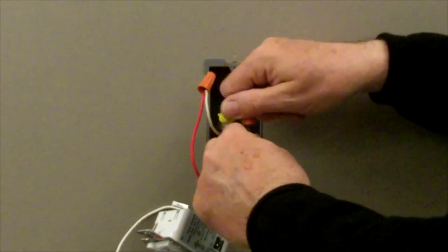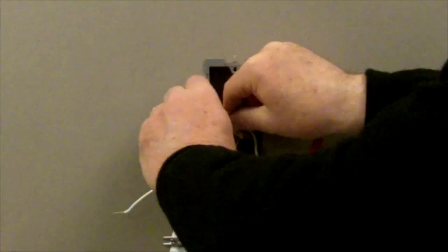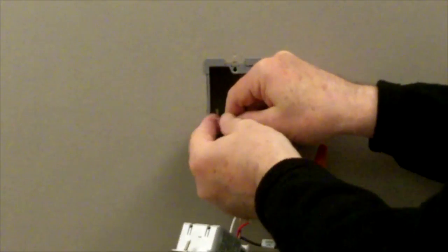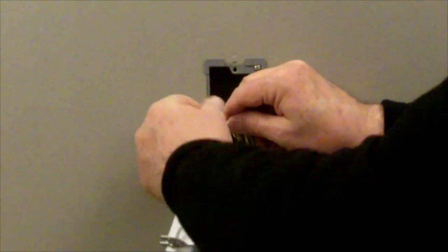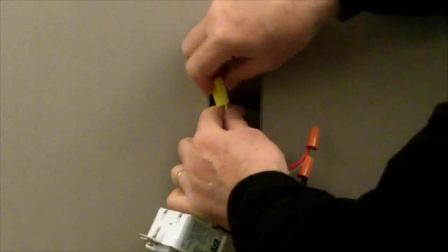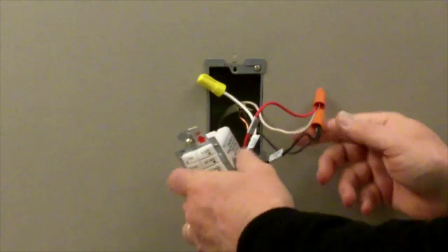Connect the green or non-insulated wire to the ground terminal on the RT1. Connect the power or hot wire from the circuit to the black wire on the RT1. Connect the power supply wire going to the lamp or fan to the red wire on the RT1. And finally, connect the neutral wires from the circuit to the white wires on the RT1.